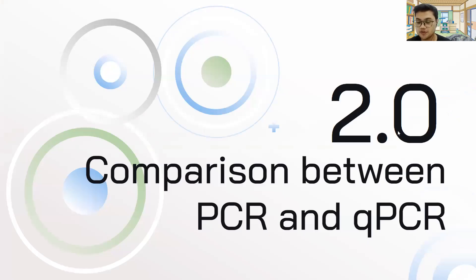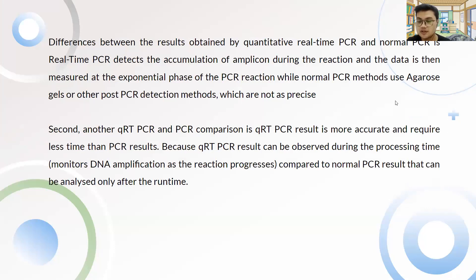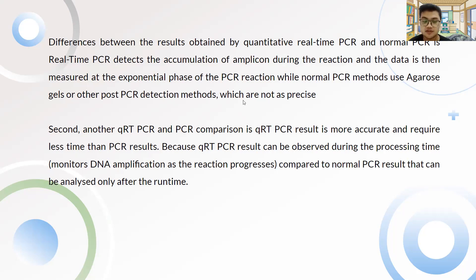Comparing qPCR and normal PCR: real-time PCR detects the accumulation of amplicon during the reaction, and data is measured at the exponential phase, whereas normal PCR uses agarose gel analysis after the run, which is less precise. Additionally, qPCR results are more accurate and require less time, as results can be monitored during the reaction as it progresses, compared to normal PCR results which can only be analyzed after the run is complete. That is all from our group — thank you very much.